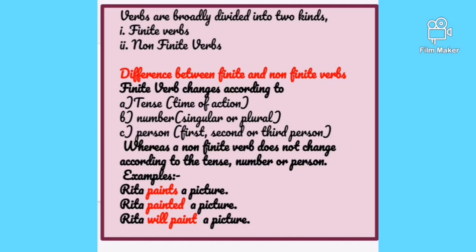Verbs can be broadly divided into two kinds: finite verbs and non-finite verbs. Finite verbs are verbs that change according to tense — that is, the time of action — the number of people doing the action, whether singular or plural, and the person — first, second, or third person pronoun — doing the action. Let me explain this with the help of examples.